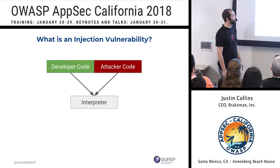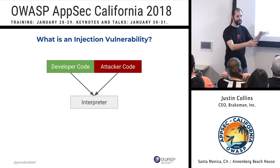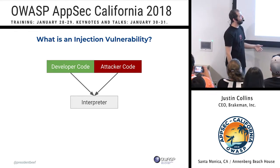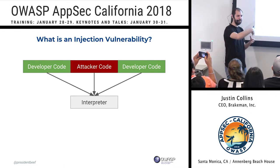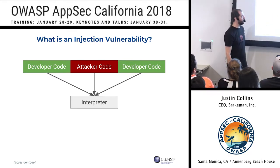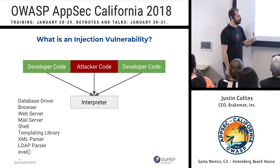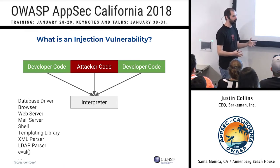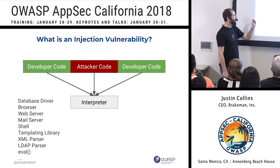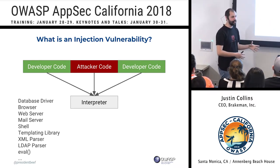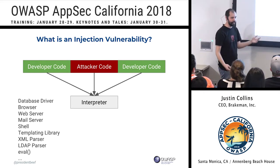Those data values somehow get interpreted as code instead — as SQL, HTML, JavaScript, CSS, Bash, or a specific programming language. That's when we get an injection vulnerability. Visually: we have some code the developer intends to be interpreted, some code from the attacker, and they both get sent to an interpreter and executed. Usually the attacker's code is kind of in the middle. The interpreter could be the database, a browser for XSS, a web server, a shell, a templating library, an XML parser, or even eval.